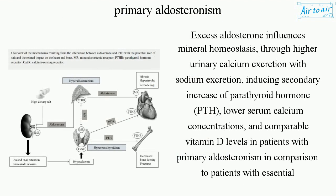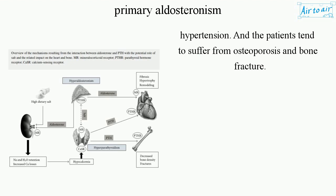Excess aldosterone influences mineral homeostasis through higher urinary calcium excretion with sodium excretion, inducing a secondary increase of parathyroid hormone (PTH), lower serum calcium concentrations, and comparable vitamin D levels. Patients with primary aldosteronism compared to those with essential hypertension tend to suffer from osteoporosis and bone fractures.